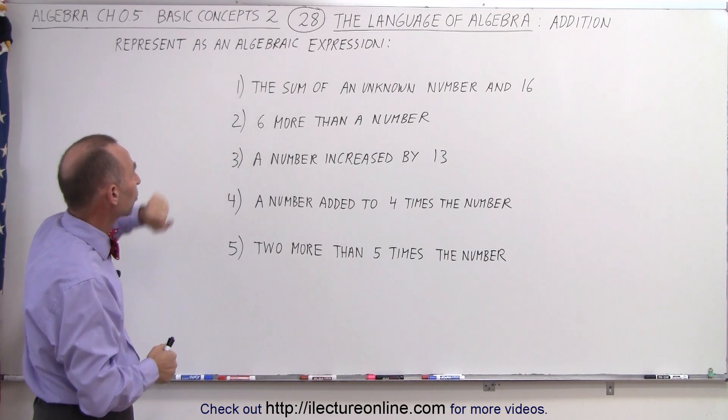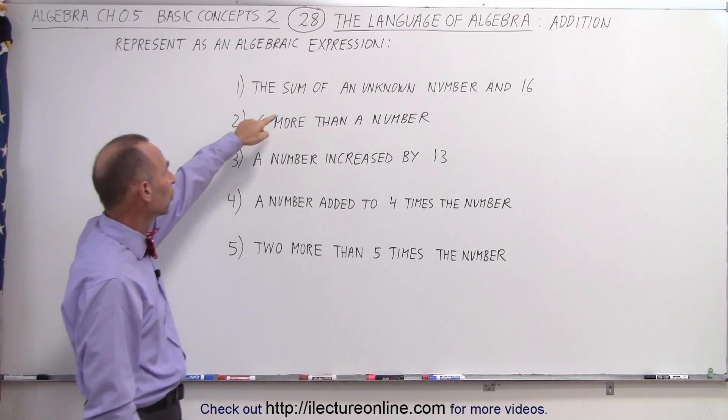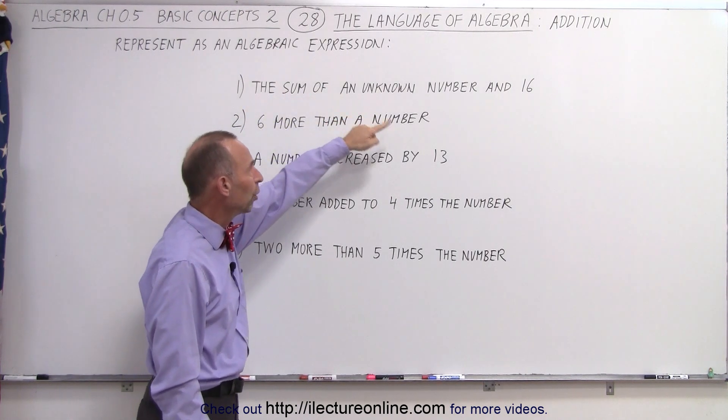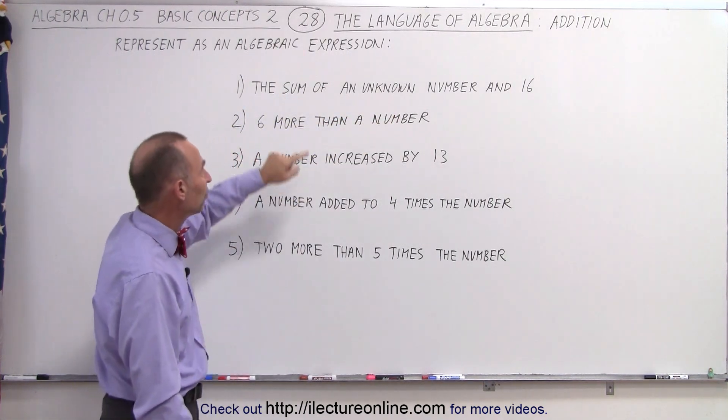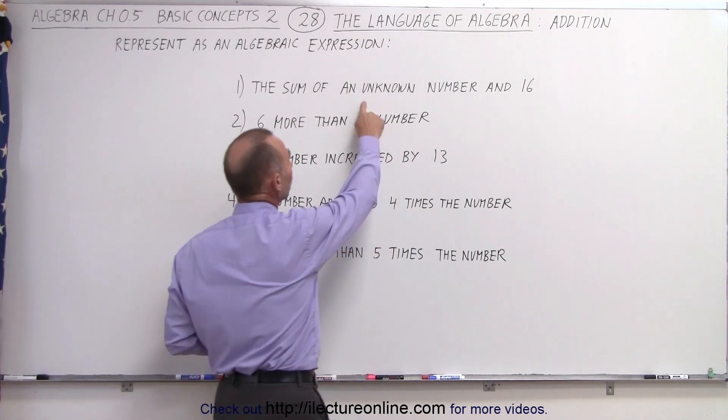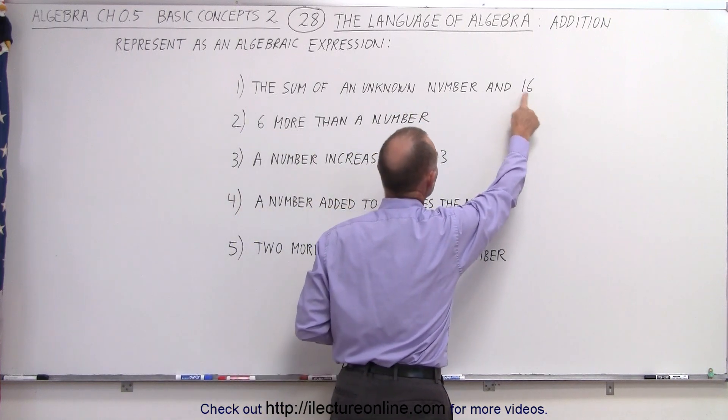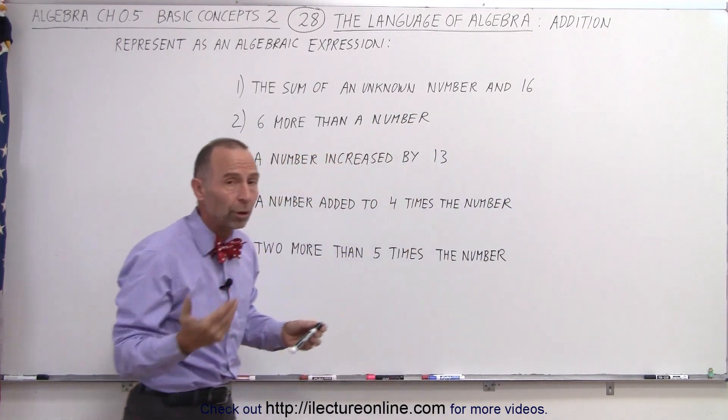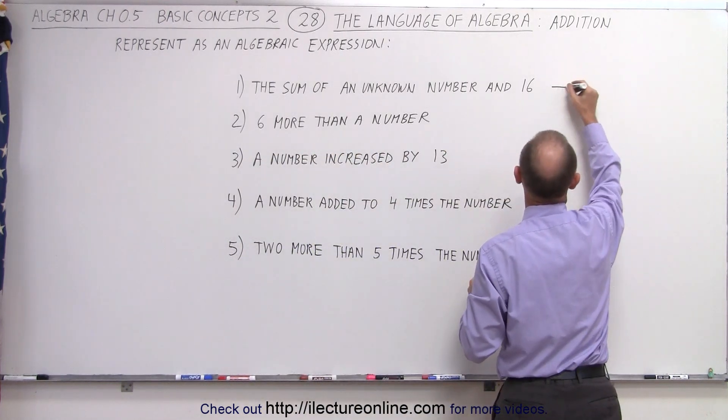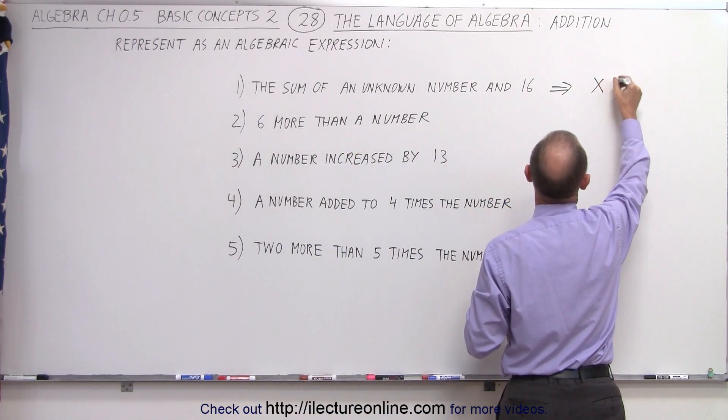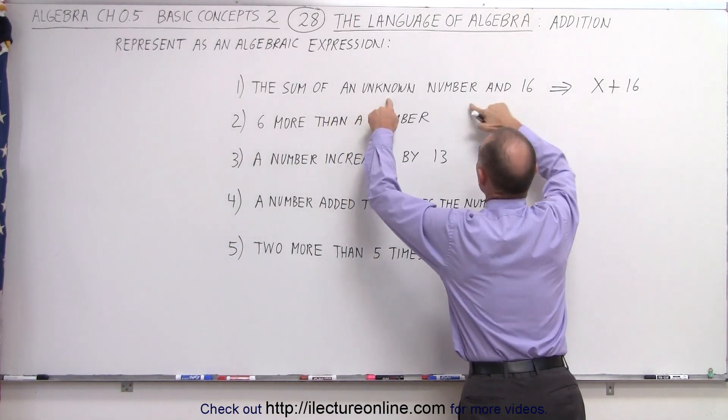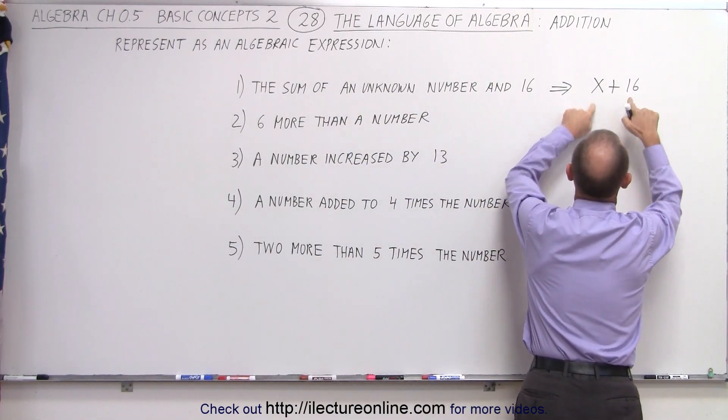And we see the word sum here in the first sentence, the sum of an unknown number and 16. We see the word sum, that typically means addition, and there's going to be two things: an unknown number and the number 16. We can let the unknown number be represented by x. So therefore, that can then be the expression x plus 16, that's the sum of two things, an unknown number and the number 16.